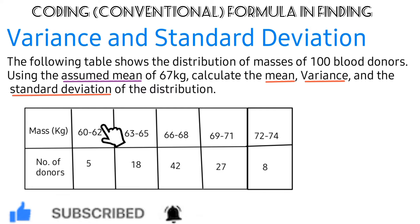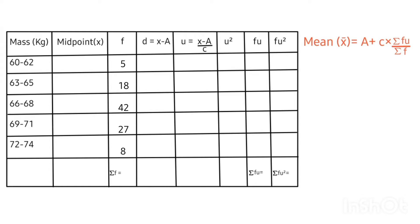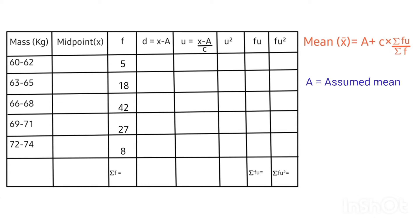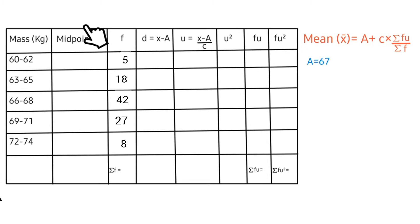We will rearrange this table in vertical order. We can see the mass and the frequency columns, and we are expected to fill up the remaining spaces. This is the formula for calculating the mean of this distribution. Here, 'a' simply means assumed mean — we are given the assumed mean as 67 — followed by 'c', which simply means class interval.